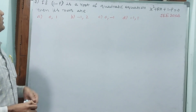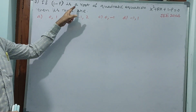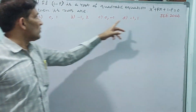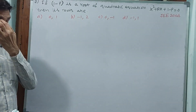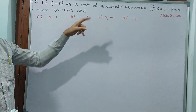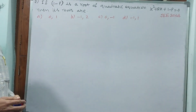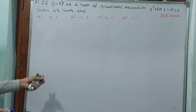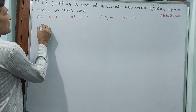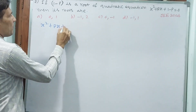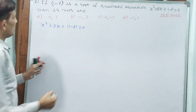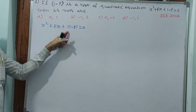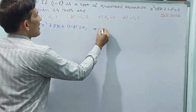Question number seven: if (1-p) is a root of the quadratic equation x² + px + (1-p) = 0, then what are its roots? Since (1-p) is a root, it satisfies the equation. Here a=1, b=p, c=(1-p). Let alpha equal to (1-p).